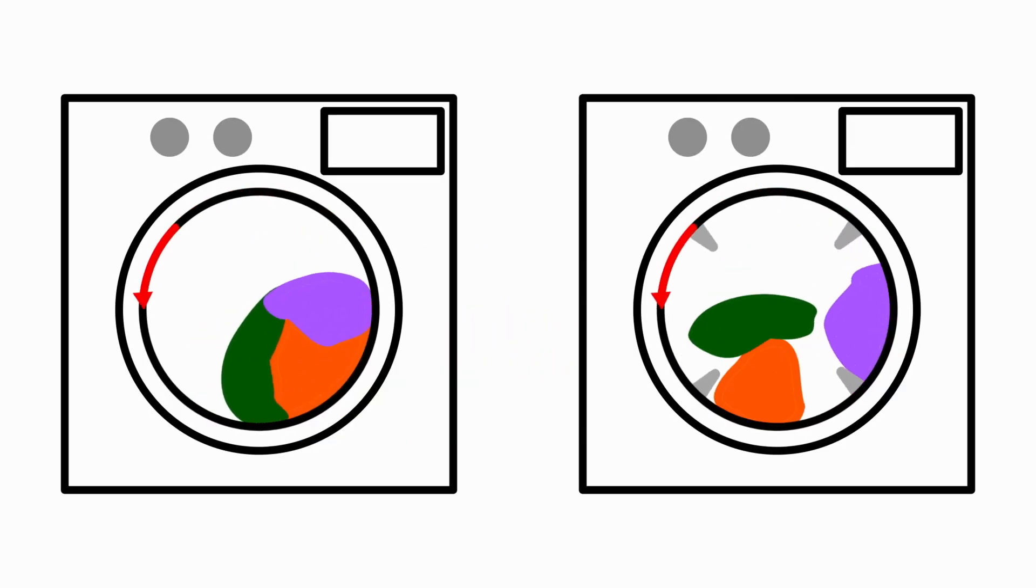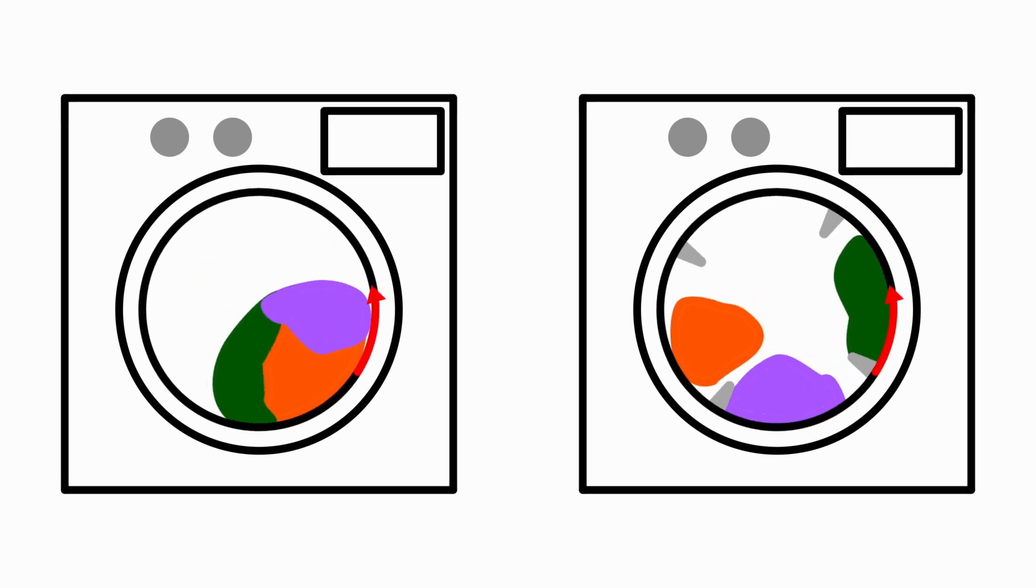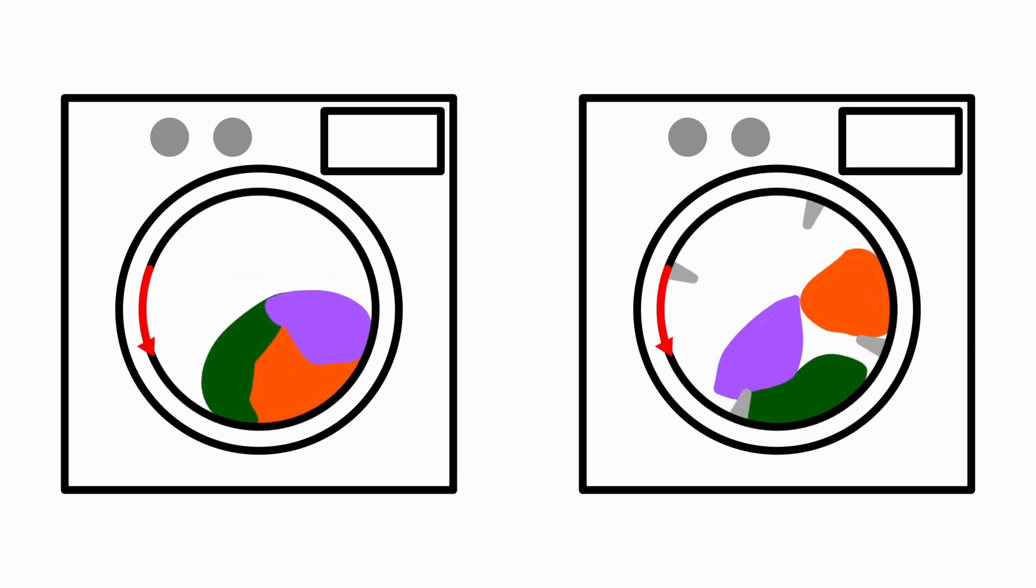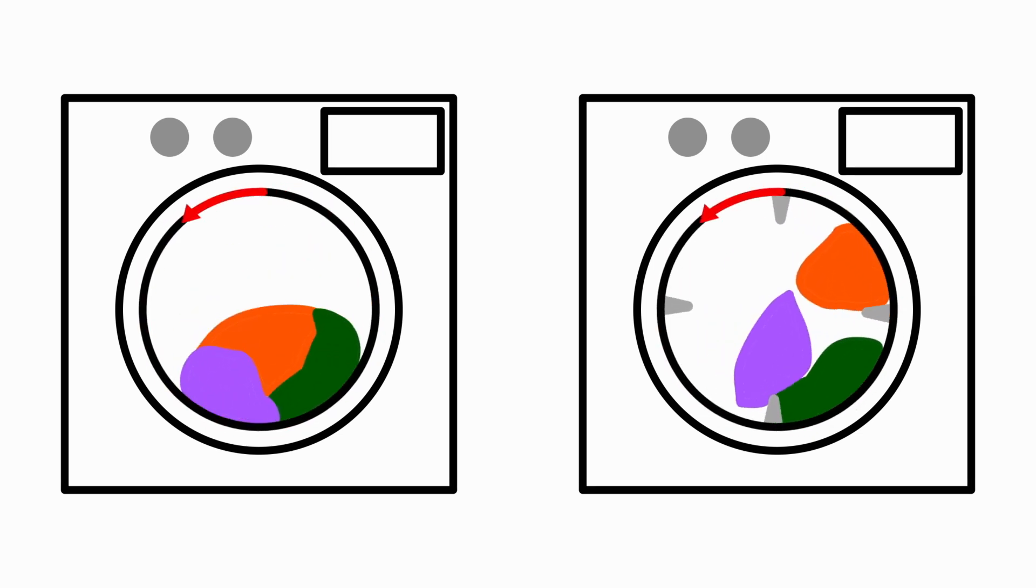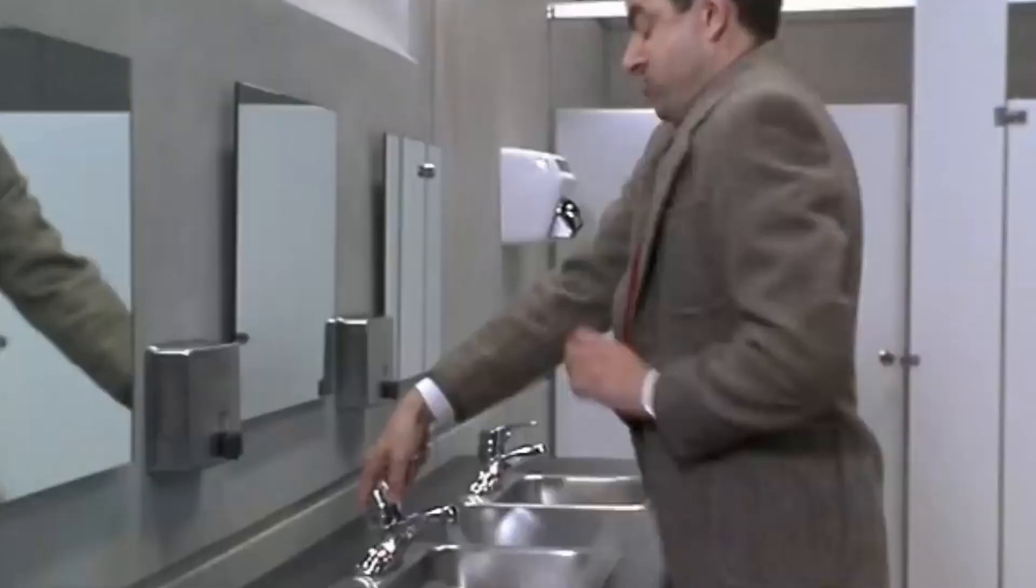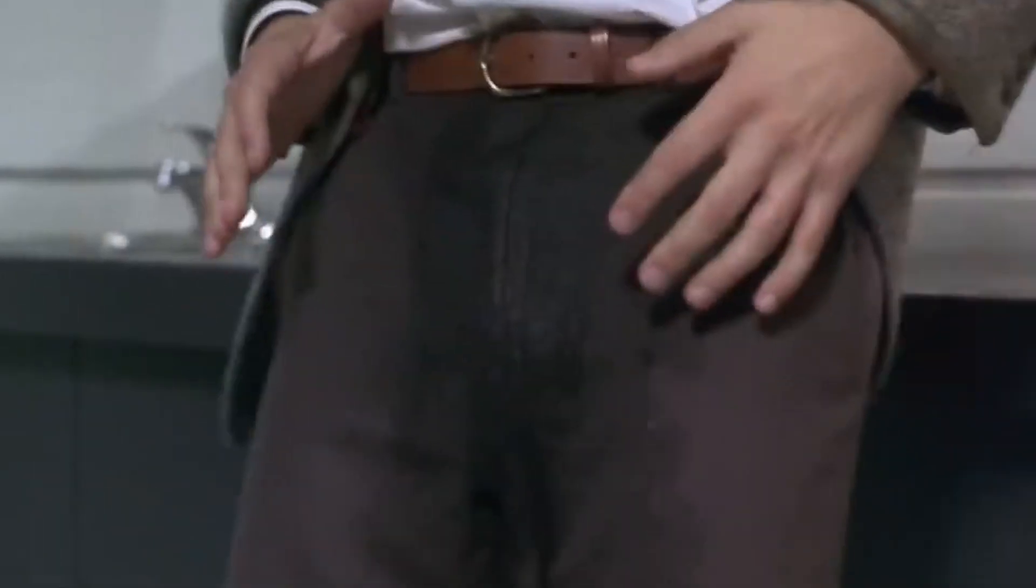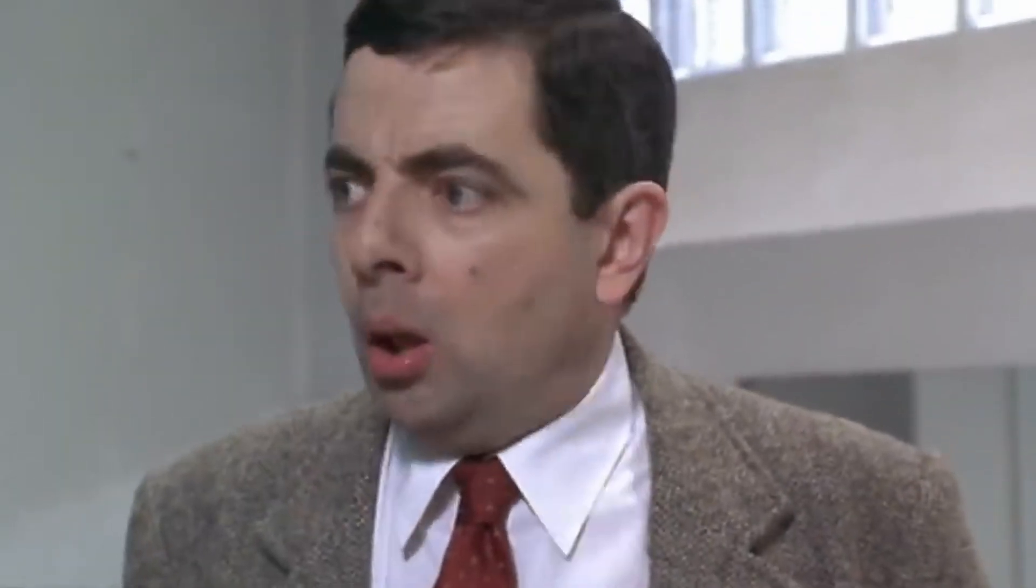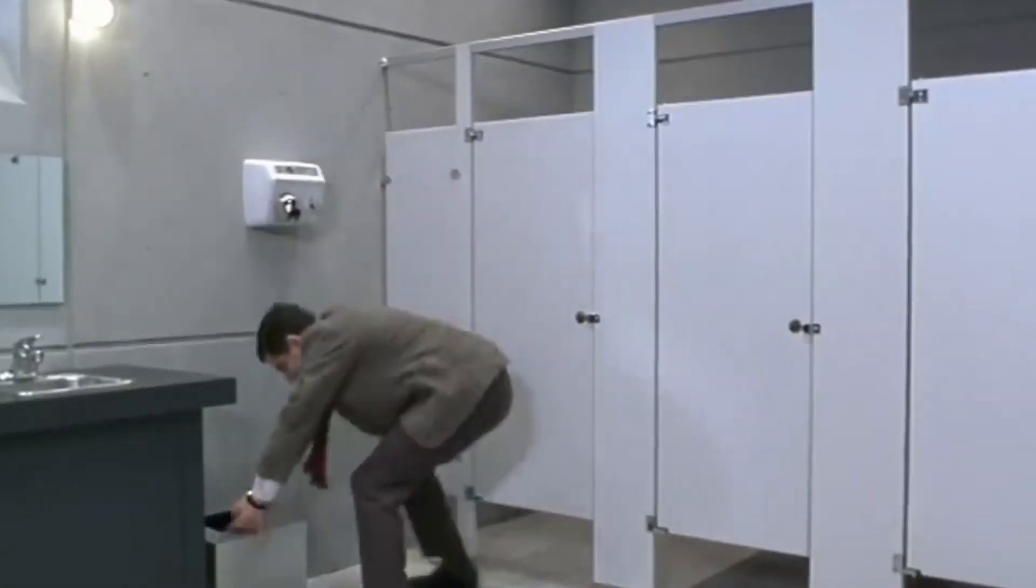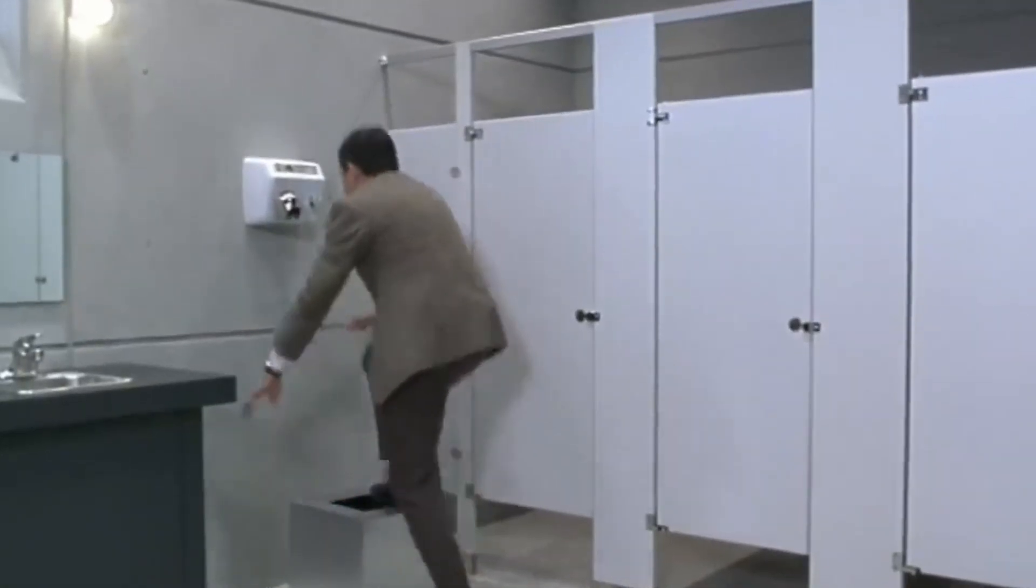The drum also has fins on the inside. They're very useful to prevent the clothing from bunching together. This exposes every surface of the clothing to the hot air, preventing uneven drying. This is critical, as nobody wants to put on their clothes and realize there's an unfortunately placed wet spot.